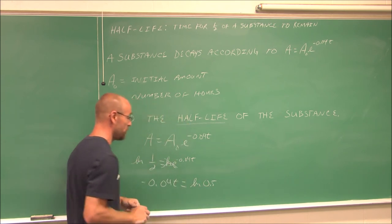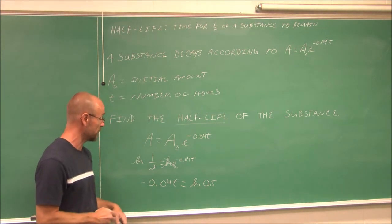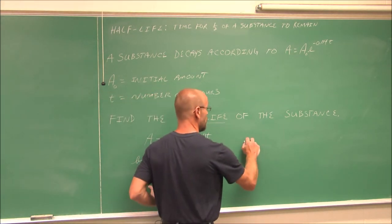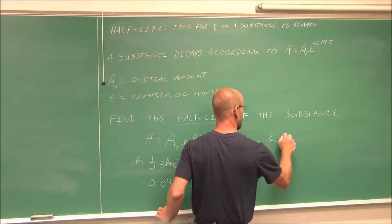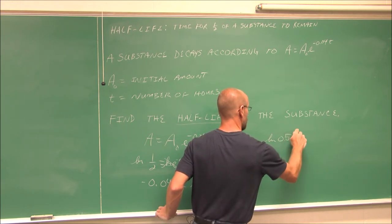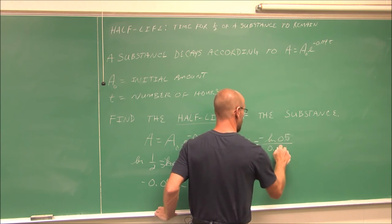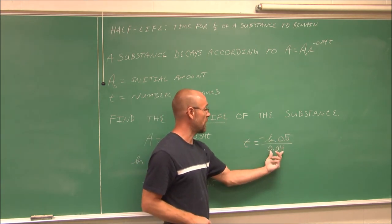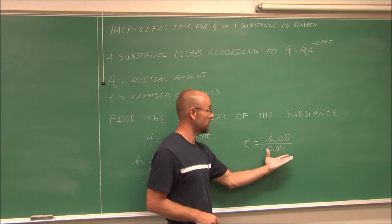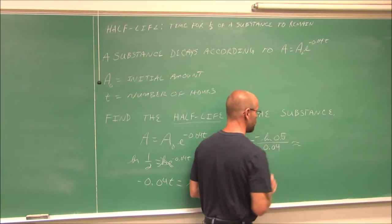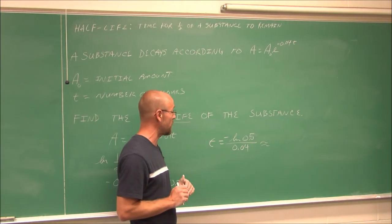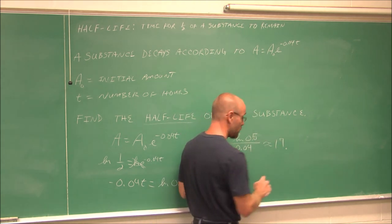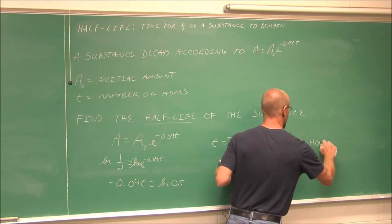I'll change it to 0.5 because this is a value we'd want to put in our calculator. Now to solve for t, I essentially just have to divide by this negative 0.04. So t equals ln of 0.5 divided by, and I'll just move that negative up top, a negative 0.04. So we have negative ln of 0.5 over 0.04. Plug that into your calculator, and you should get 17.33 hours.